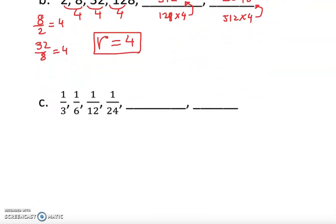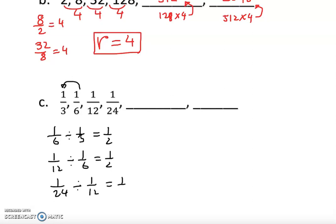Sometimes we are going to have fractions, not always whole numbers. We do the same thing: divide the second number by the first. So 1/6 divided by 1/3 gives 1/2, and 1/12 divided by 1/6 also gives 1/2. Our common ratio is 1/2. Once we know it, we multiply by 1/2: the next term is 1/48, and after that 1/96. That's how we find the missing numbers.